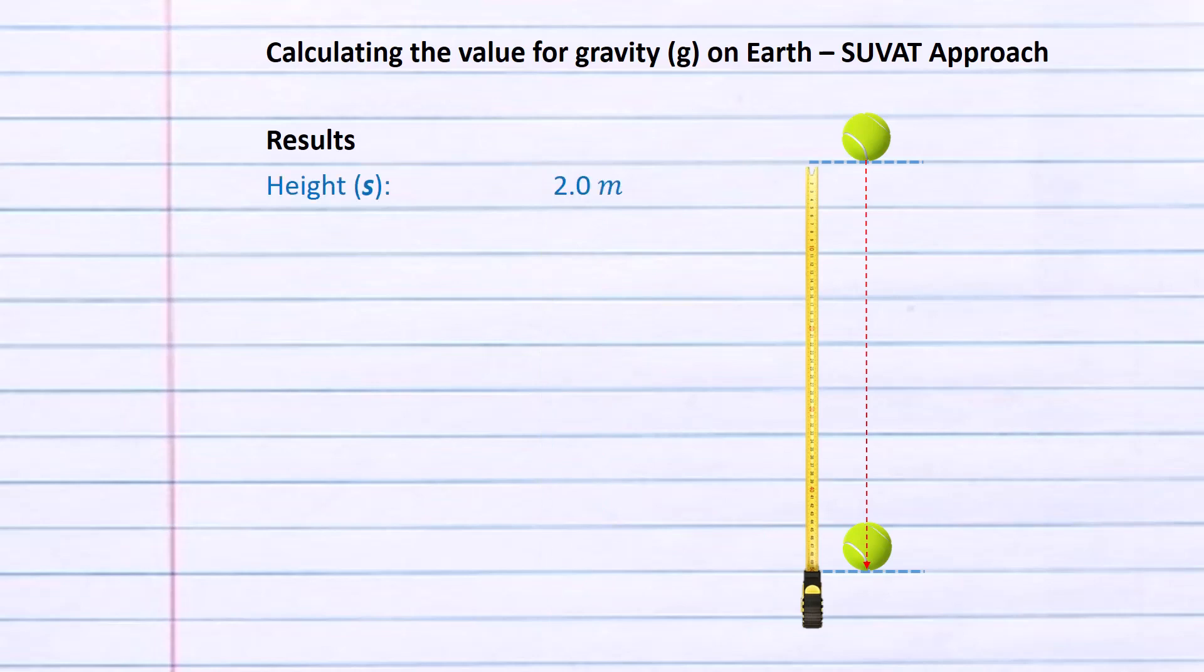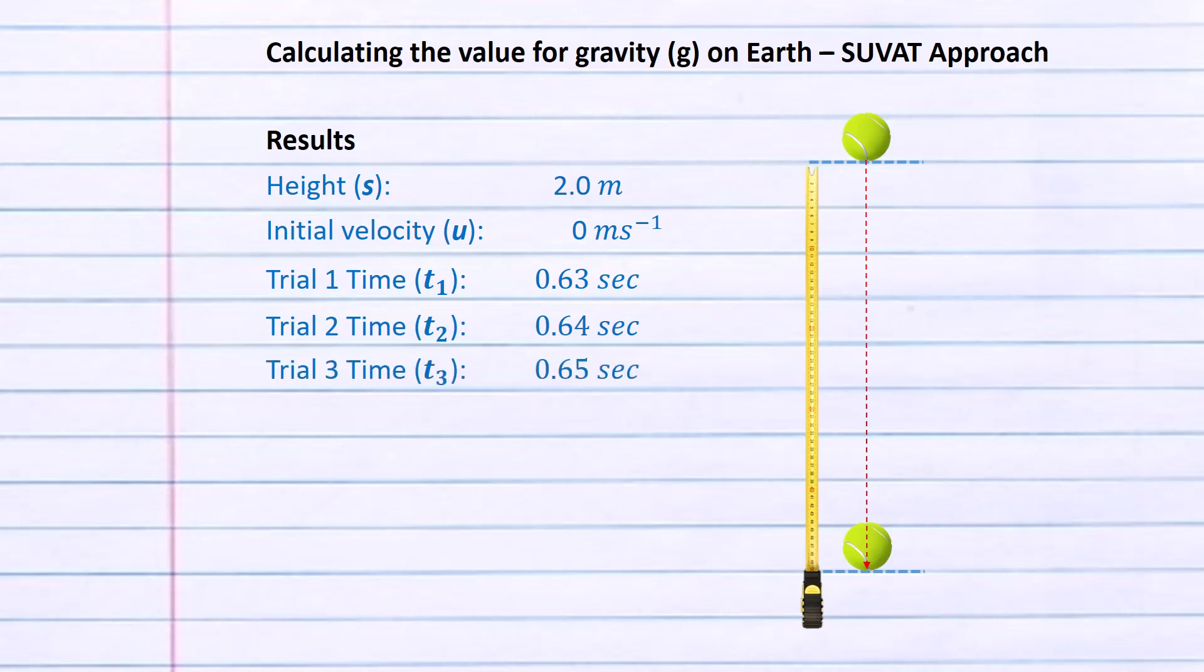Let's write this down. We've got the height of two meters, initial velocity of zero. The first time trial t1 is 0.63 seconds, the second trial t2 is 0.64 seconds, and the third trial t3 is 0.65 seconds. We can average those three time trials by adding them together and dividing by three, which gives us a value of 0.64 seconds.